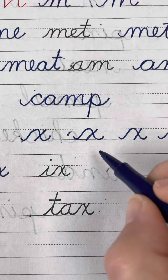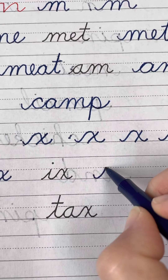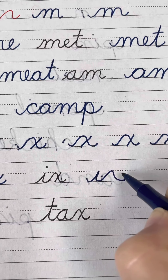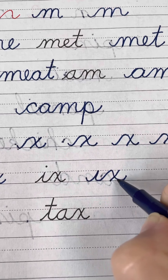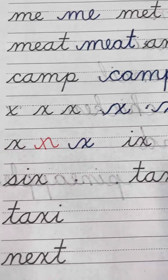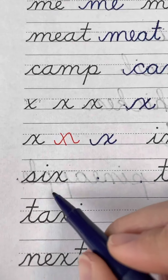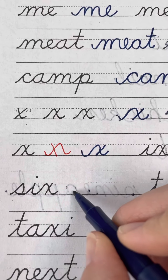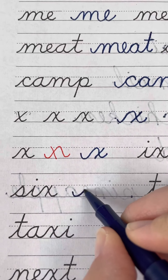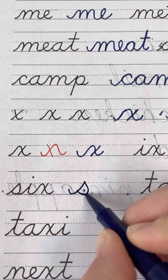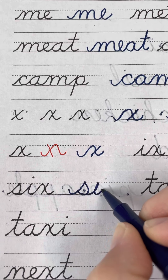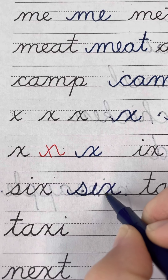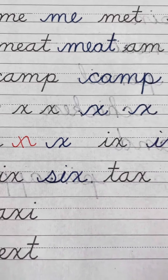All right, now here's just a sound: I-X. What about the number six? We actually haven't learned the S yet, but it's swoop up with a belly. I-X. Cross your X, dot your I for six.